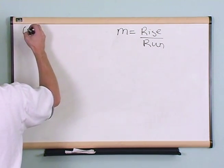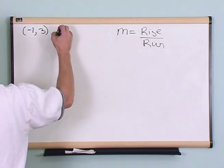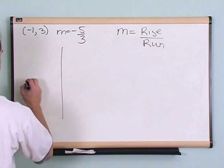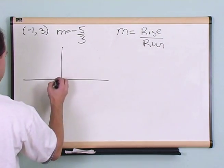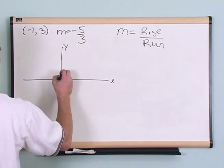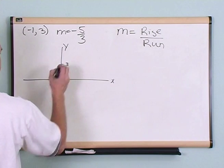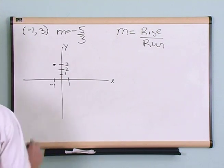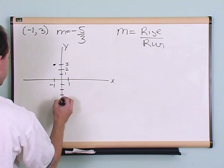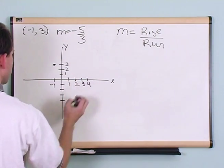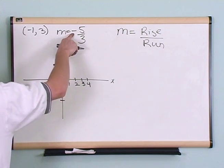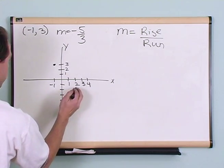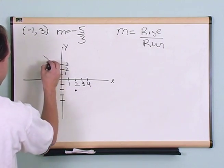Let's do one more to solidify this. The point is (-1, 3) and the slope is negative 5 thirds. I just picked that because the slope is a fraction. First, plot the point at x equals negative 1, y equals 3. Now, the slope is negative 5 over 3 — rise over run. Because the rise is negative 5, instead of going up, I go down 5 units: 1, 2, 3, 4, 5. Then over to the right 3 units: 1, 2, 3. That gives me my second point.